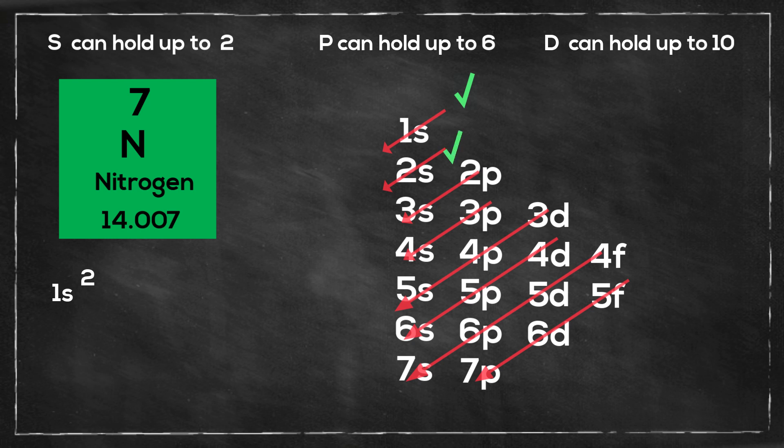Then I go to 2s, and that will be 2s2. So I've used 4 electrons, and then we have 2p3. And you can write it in shorthand using the noble gas, and here's what that looks like.